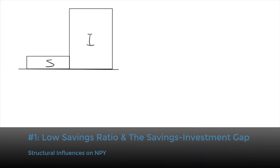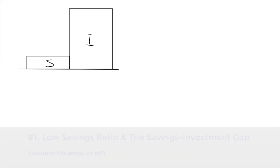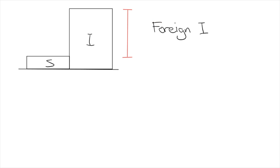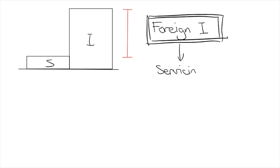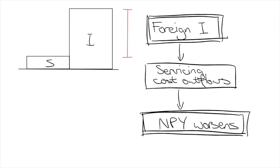The biggest structural influence causing this NPY deficit is that Australia has a low savings ratio. This means that there's a shortage of funds for Australians who want to invest — what we call a savings investment gap. So Australians then turn to foreign lenders and investors for the funds needed. This of course incurs servicing costs that are debits in the NPY account, contributing to the ongoing deficit.